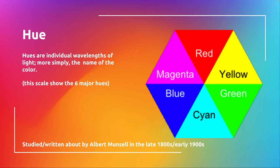Attributes of color. Hue — to super simplify it, hue is the name of a color. Red is the red hue. So the individual wavelengths of light — those wavelengths reflected by objects — determine the hue. This shows the six major hues, very similar to primary and secondary colors, with magenta included as well.